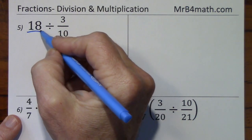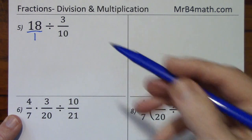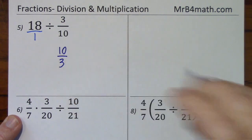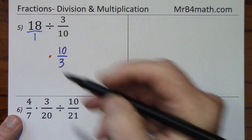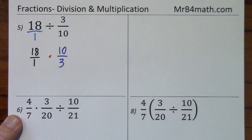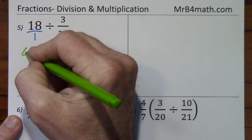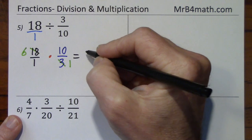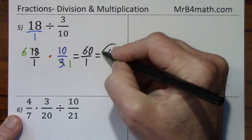Looking at number 5, we'll write 18 as an improper fraction. We'll take the reciprocal of 3 tenths. Change division to multiplication. Bring down this 18 over 1. And we can reduce. Divide by 3. Divide by 3. Divide by 3. Multiply straight across. 60 over 1, but you have to keep going — the correct answer is 60.